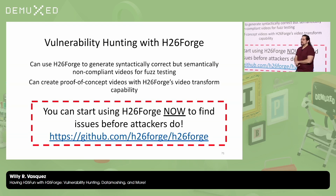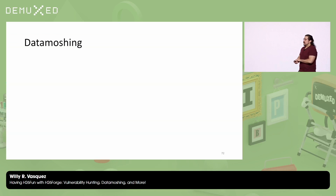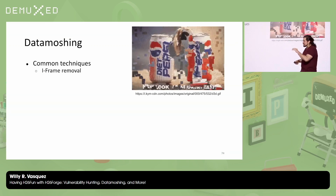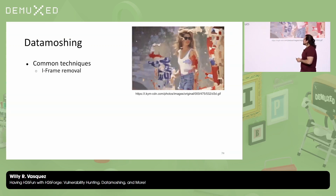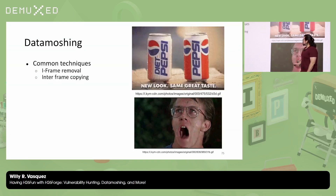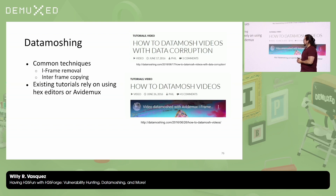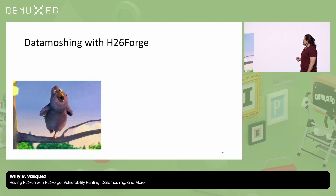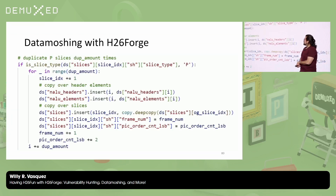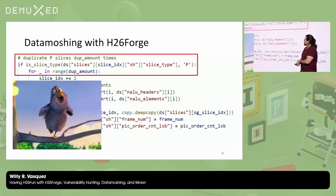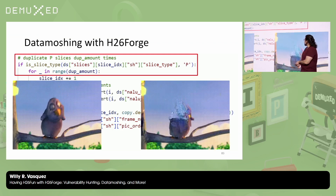Moving on to the other use case for H26Forge: data moshing. There are two common techniques. The first is I-frame removal, so your intra-predicted slices are based off of some other random keyframe. And also intra-frame copying, which has an amplifying effect for motion. There are existing tutorials on data moshing with hex editors or AVI Demux, and those are great. But what we're proposing is data moshing with H26Forge. Take a scene from Big Buck Bunny, apply a data moshing transform that duplicates each intra-predicted slice some number of times, and you get this amplified motion effect.